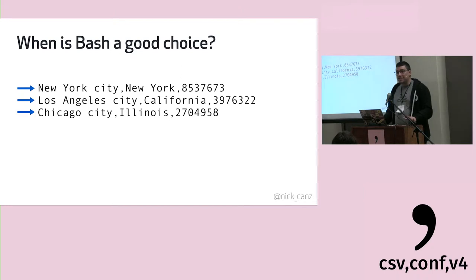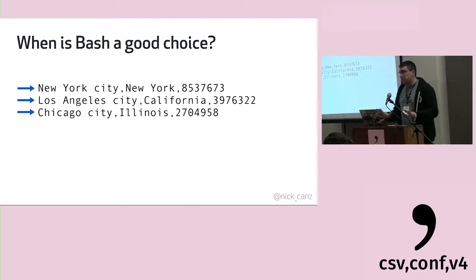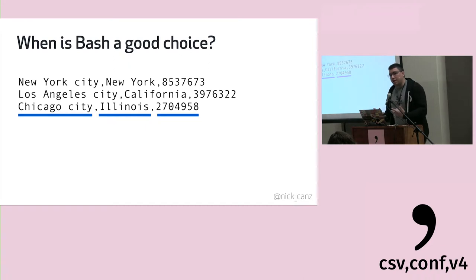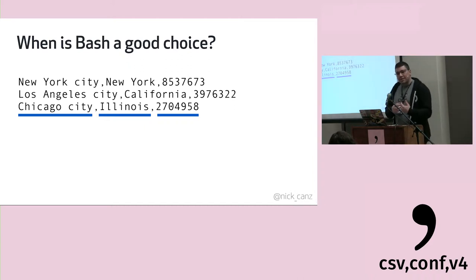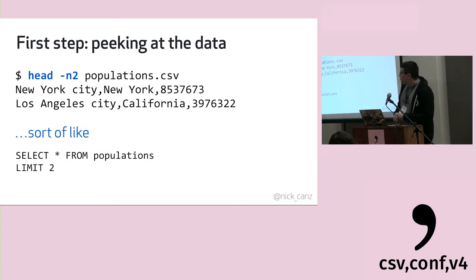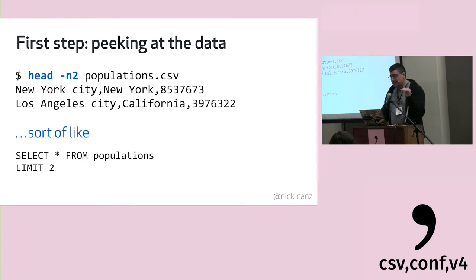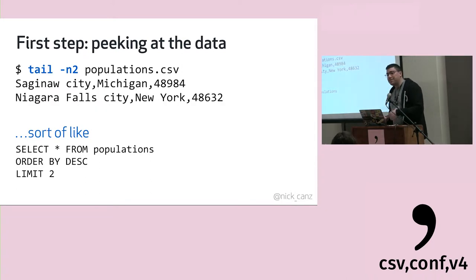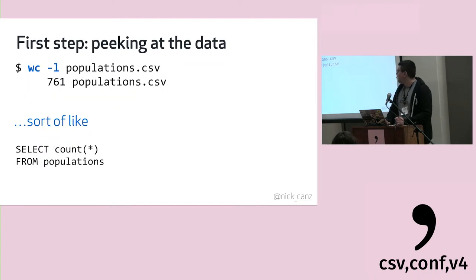When is bash a good choice? When your data is line-based — all the core utilities understand lines really well. If you have multi-line data like a stack trace, bash is probably not a good idea. It's also good when you have a consistent structure; CSV is a great example, as are server logs. The first step in any data analysis is to peek at your data. 'head' shows you the first N lines — like a SELECT * LIMIT 2 in SQL. 'tail' shows the last N lines. 'wc' with the -l option counts lines.